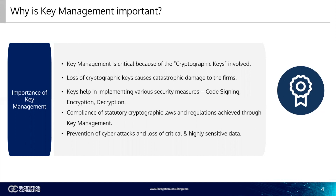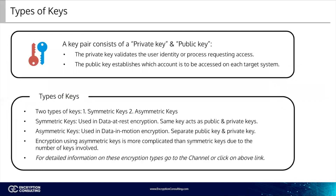Well-protected keys are only accessible by users who need them. Here are some of the types of keys: public and private. A key pair consists of a private key and a public key. The private key validates the user identity or process requesting access. The public key establishes which account is to be accessed on each target system. Using these keys, one can achieve either symmetric or asymmetric encryption. Symmetric keys deal with data at rest, which is data stored in a static location, such as a database.